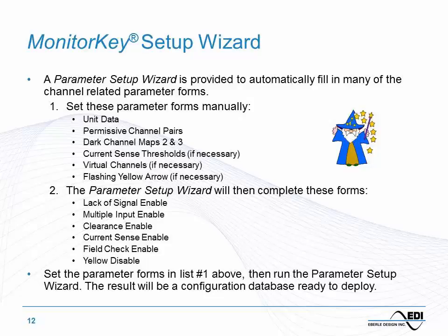The forms to complete manually are listed in item one — unit data, permissive channel pairs (the conflict matrix), and some others that may or may not be needed. Run the setup wizard and it completes the six forms listed in item two, then write it to the key and you're ready to go. Most programming errors I've found are in the forms that the wizard will do for you. If you give the wizard accurate inputs, it will generate very accurate programming.